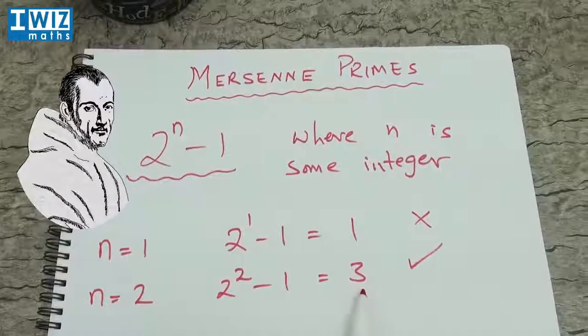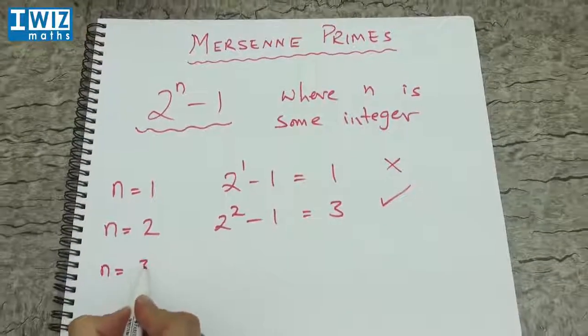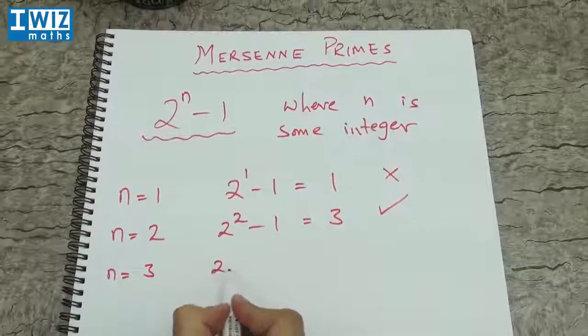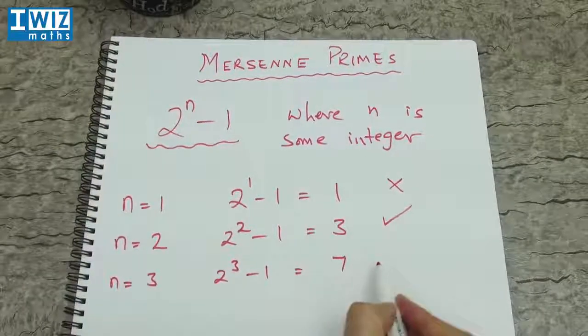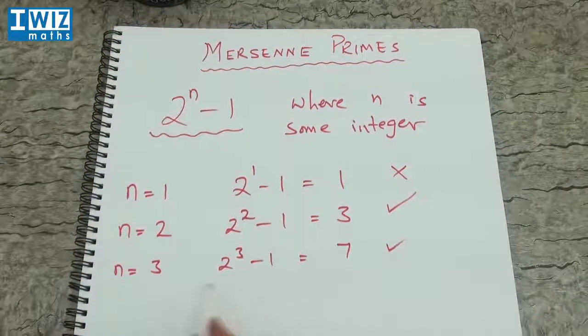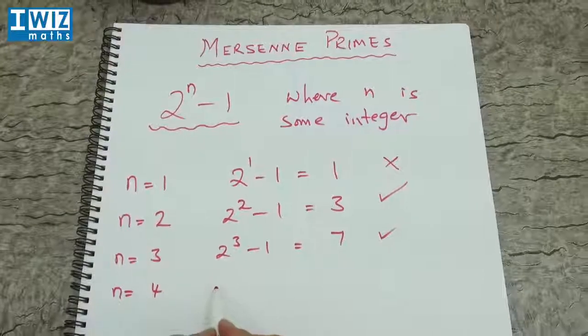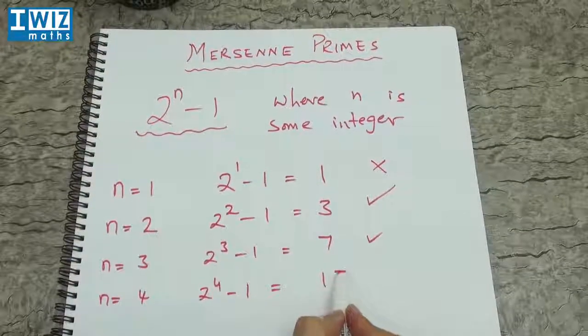So 3 turns out to be the first Mersenne prime. With n is equal to 3, we get 2 to the 3 minus 1, which is 7, which is also a prime and hence also a Mersenne prime. With n is equal to 4, we get 2 to the 4 minus 1, which is 15, which is not a prime.